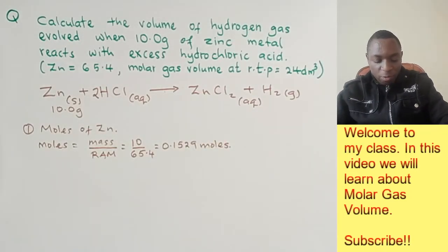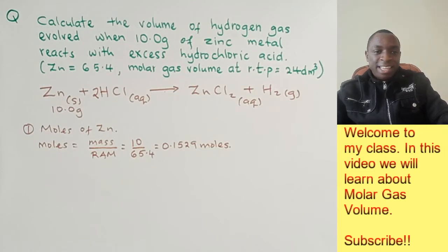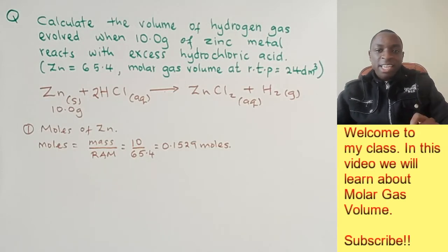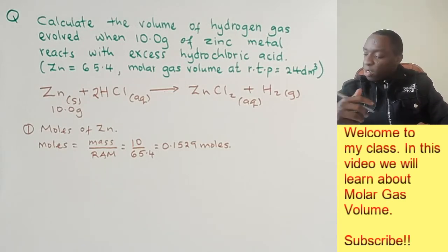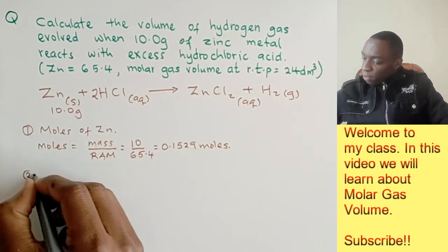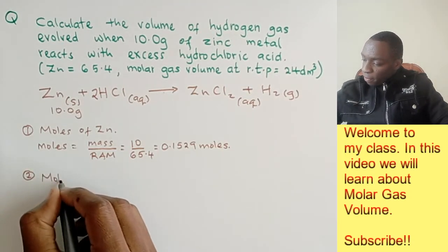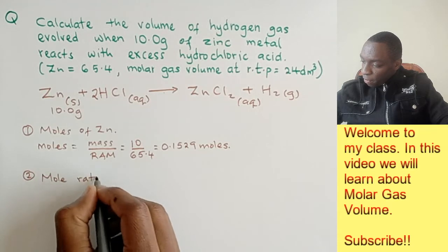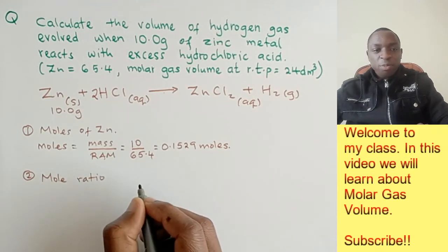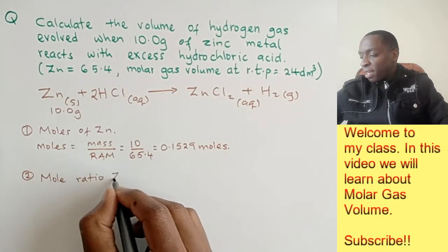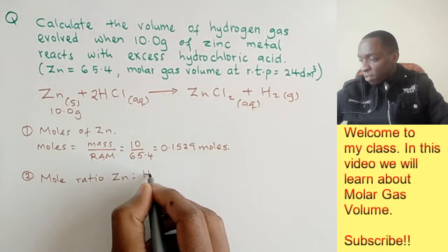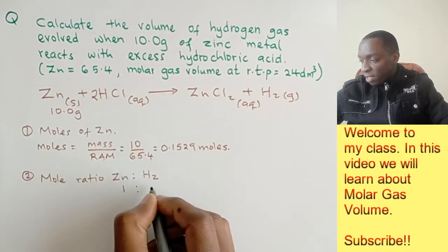This gives us 0.1529 moles. Now that you know the number of moles of zinc that are reacting, the next thing is to use the mole ratio.